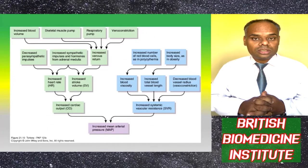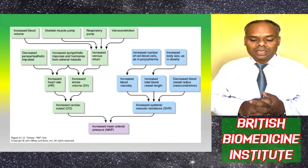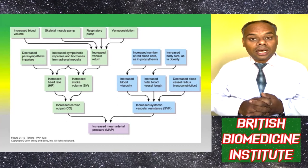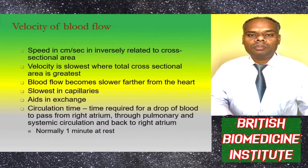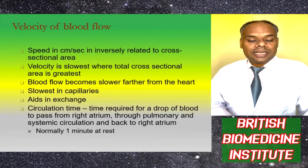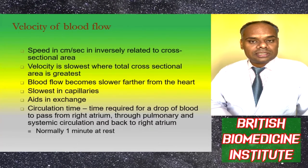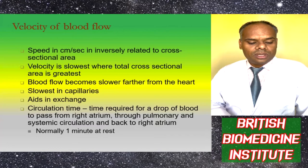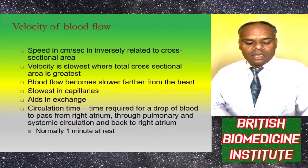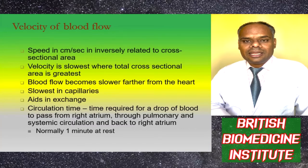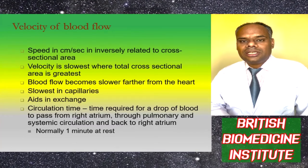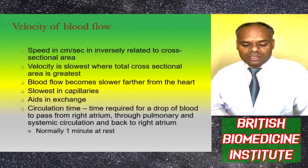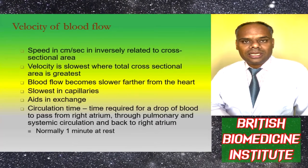A diagram distinguishes cardiac output versus systemic vascular resistance (SVR). Increased systemic vascular resistance leads to increased mean arterial pressure (MAP). The velocity of blood flow, measured in cm per second, is inversely related to cross-sectional area — velocity is slowest when the total cross-sectional area is greatest. Blood flow becomes slower further from the heart and is slowest in capillaries, which aids in exchange. Circulation time is the time for a drop of blood to pass from the right atrium through pulmonary and systemic circulation and back, approximately one minute at rest.